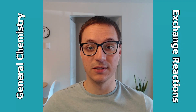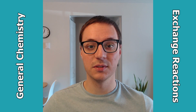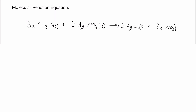An exchange reaction occurs when two ionic compounds switch ionic partners. Here I've written out the full molecular reaction equation for the exchange reaction between barium chloride and silver nitrate. On the product side they've switched ionic partners — silver is now with chloride and barium is now with nitrate.